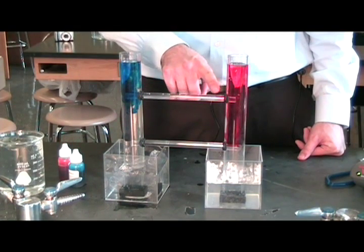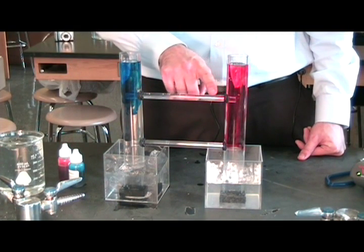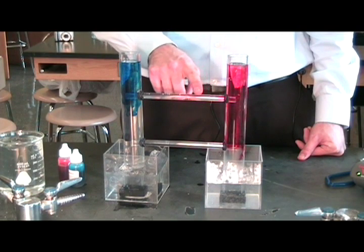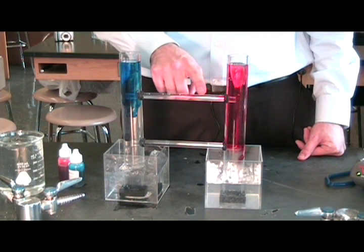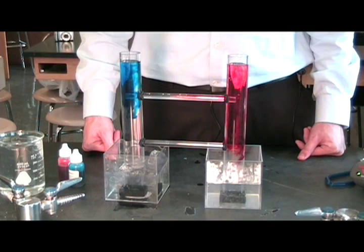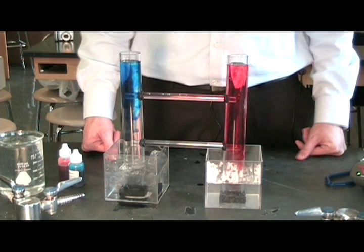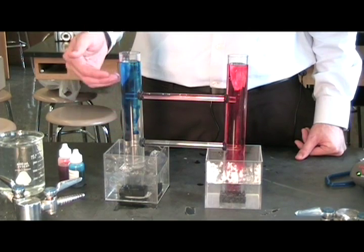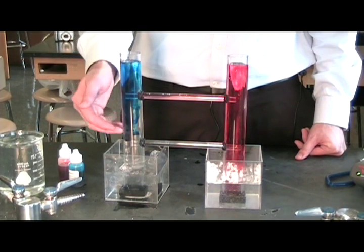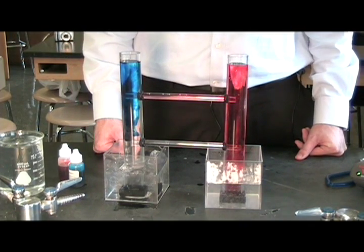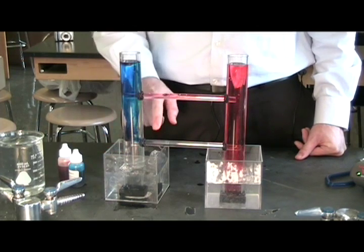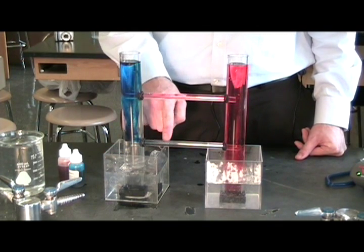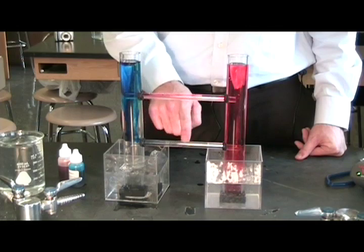I don't know if you can actually see this, but there is some red food coloring that's beginning to travel through this upper tube. And if you notice over here, this blue food coloring is beginning to sink down towards the bottom. And it's now beginning to make its way across.